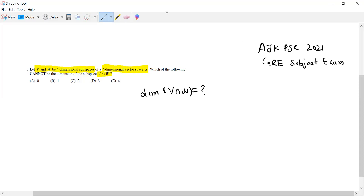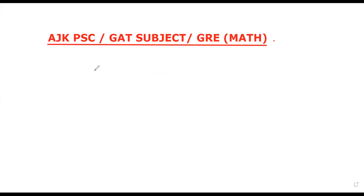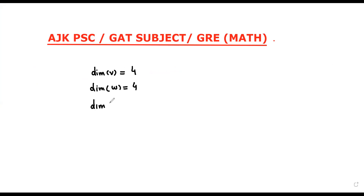Now we move toward our solution. We are given that the dimension of V, which is a subspace, is equal to four. Also, the dimension of W is equal to four. Both are subspaces of X, where the dimension of X is equal to seven.